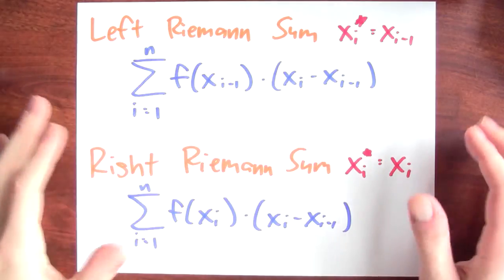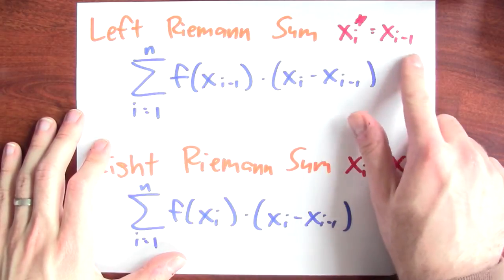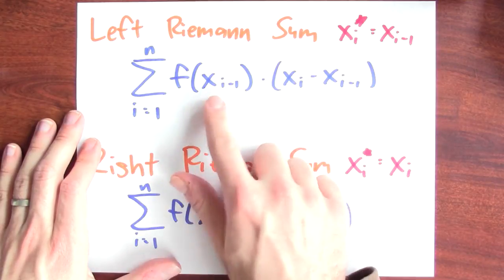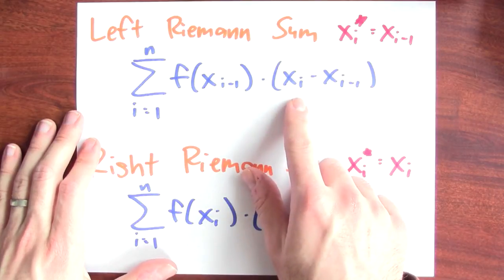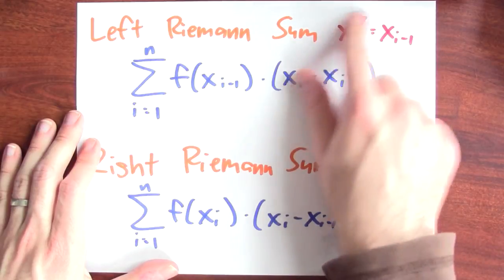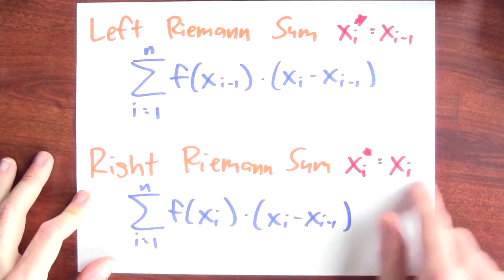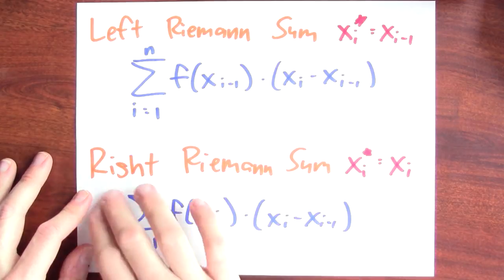There are specific names for particular kinds of Riemann sums. If we pick our i-th sample point x_i star to be the left-hand endpoint x_{i-1}, then we can write the Riemann sum as the sum over all rectangles of f evaluated at the left-hand endpoint times the width of that rectangle. This is called a left Riemann sum. Similarly, there's a right Riemann sum where the sample points are chosen to be the right-hand endpoints x_i, and we call this a right Riemann sum.